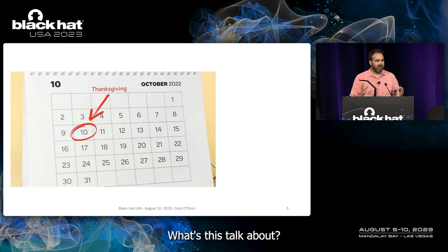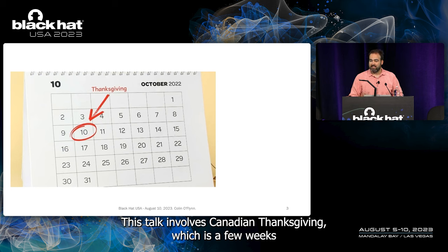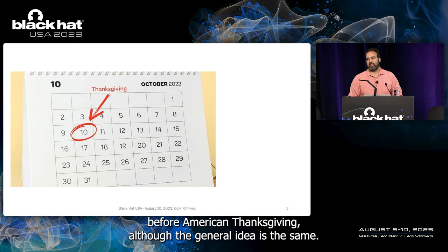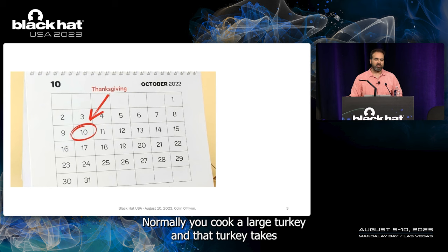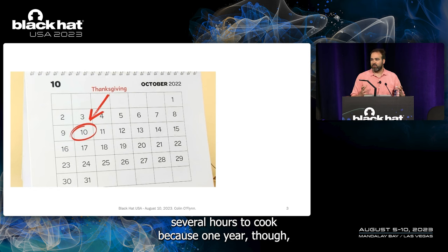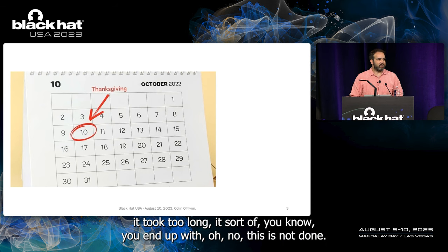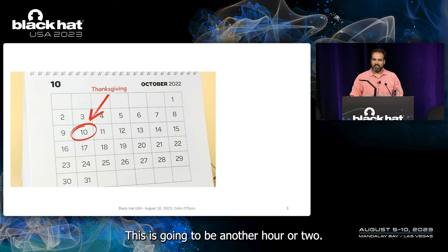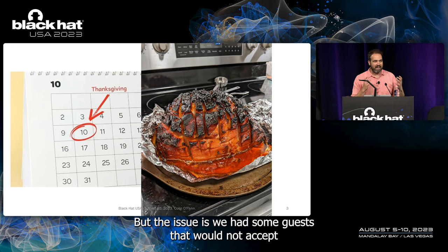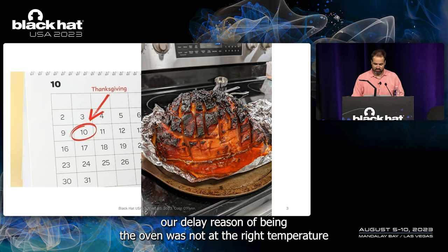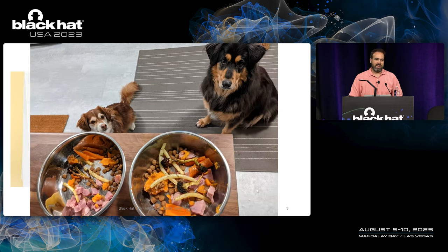This talk involves Canadian Thanksgiving, which is a few weeks before American Thanksgiving. You normally cook a large turkey, which takes several hours. One year it took too long — the turkey wasn't done and needed another hour or two. We switched to cooking ham, which is a contentious point. But the real issue was that some guests would not accept our reason for the delay — that the oven wasn't at the right temperature — and they became very disgruntled.